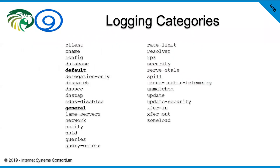There are categories, and yes, it is quite a wonderful list. We have clients, we have CNAMEs, and many others. If you're looking at an event — for example, zones aren't being transferred correctly — you might want to look at 'notify,' because that's one of the mechanisms used to signal when a zone transfer should occur. We also have xfer-in and xfer-out to look at specific zone transfers. I'll give you a link a little bit later where you can find all of these and the definitions of what's actually logged into them.